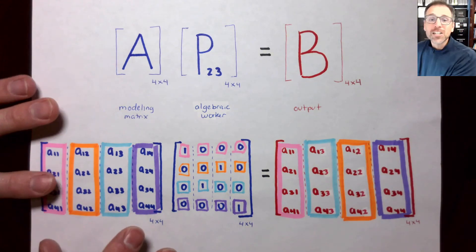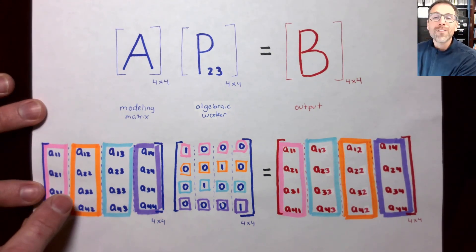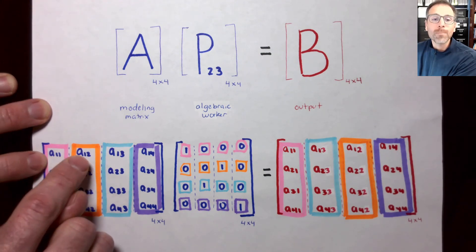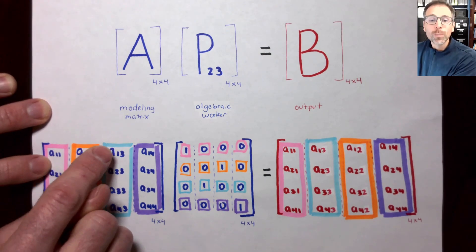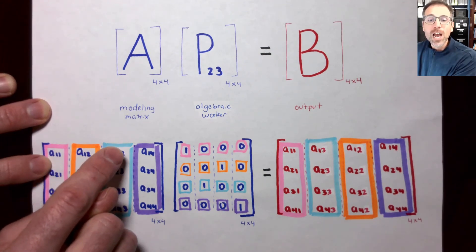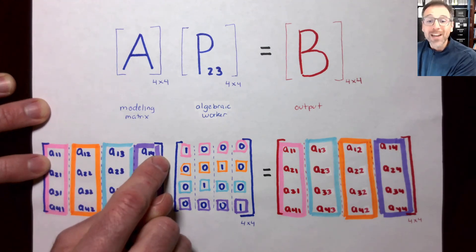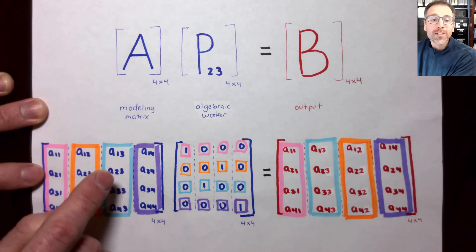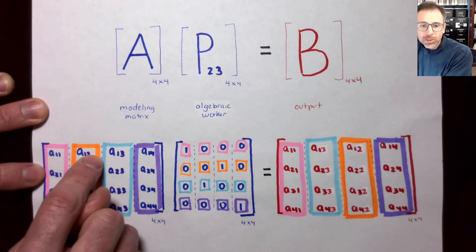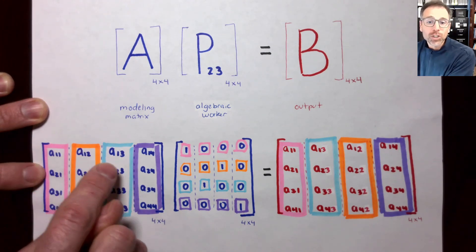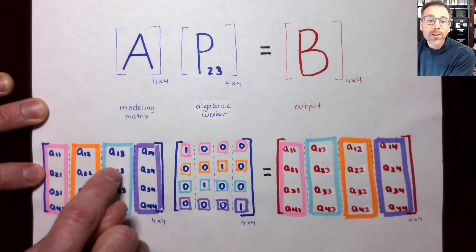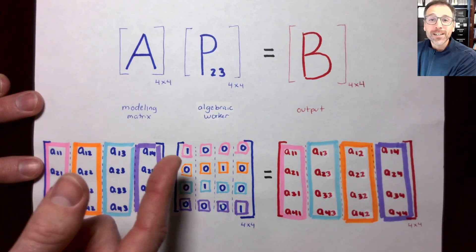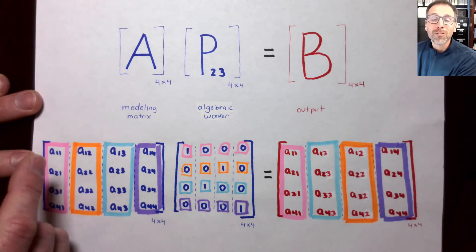This leads to the community challenge: what if I wanted to do a general permutation? For example, take column one and put it in column two, column two to column three, column three to column four, and column four all the way back to column one. Or what about a different permutation — column two to one, three to two, four to three, one to four? How would you do that? Play around with it, make a conjecture, use the definitions, and work from there.